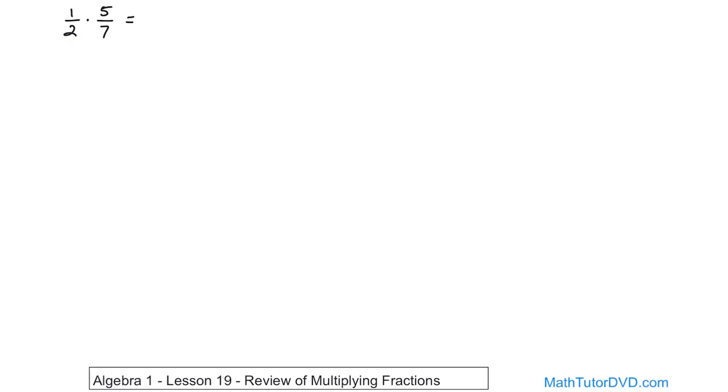It's very simple to multiply fractions. All you do, you multiply the numerators together. 1 times 5 will give you 5, and then separately, you multiply these denominators together, 2 times 7, and that's going to give you 14. So literally all you do, and that's it because it's simplified, you multiply the tops, you multiply the bottoms, and you simplify. That's all you have to do. So multiplying fractions is extremely easy to do.